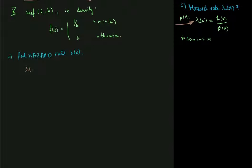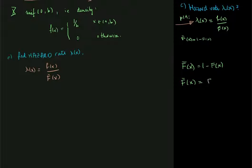By the book's formula, the hazard rate lambda of x equals the density of x divided by the survival function. The survival function of x is given by 1 minus the distribution function — it is the probability that x is greater than some value little x, whereas the distribution function is the probability that x is less than or equal to little x.